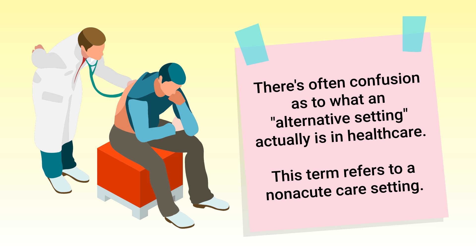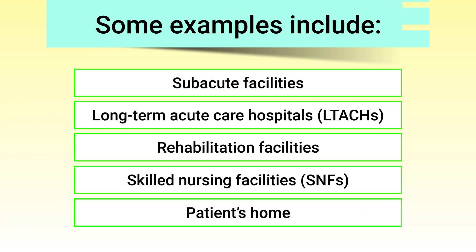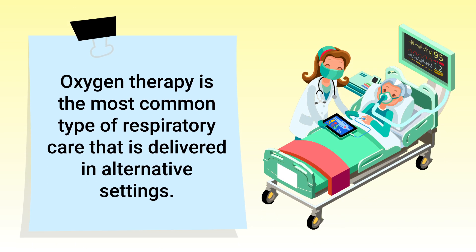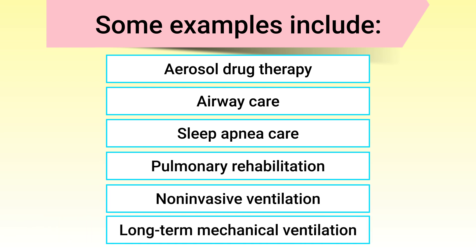There's often confusion as to what an alternative setting actually is in healthcare. Basically, this term refers to a non-acute care setting. Some examples include sub-acute facilities, long-term acute care hospitals or LTACs, rehabilitation facilities, skilled nursing facilities, and the patient's home. Oxygen therapy is the most common type of respiratory care delivered in alternative settings. Some other examples include aerosol drug therapy, airway care, sleep apnea care, pulmonary rehabilitation, non-invasive ventilation, and even long-term mechanical ventilation.